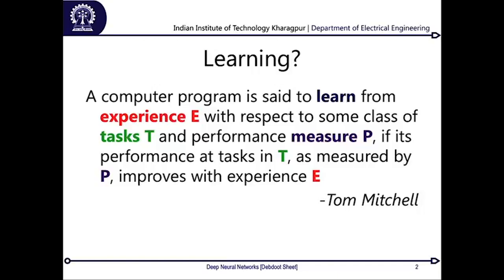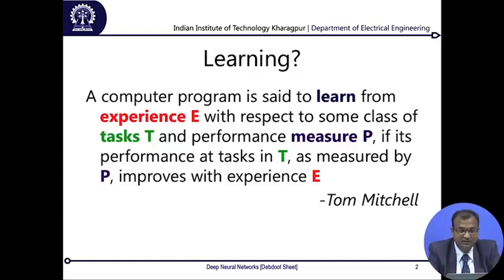Tom Mitchell says that a computer program is said to learn from experience E with respect to a certain class of task T and performance measure P. It is learning only if its performance at task T, as measured by P, is going to improve with experience E.